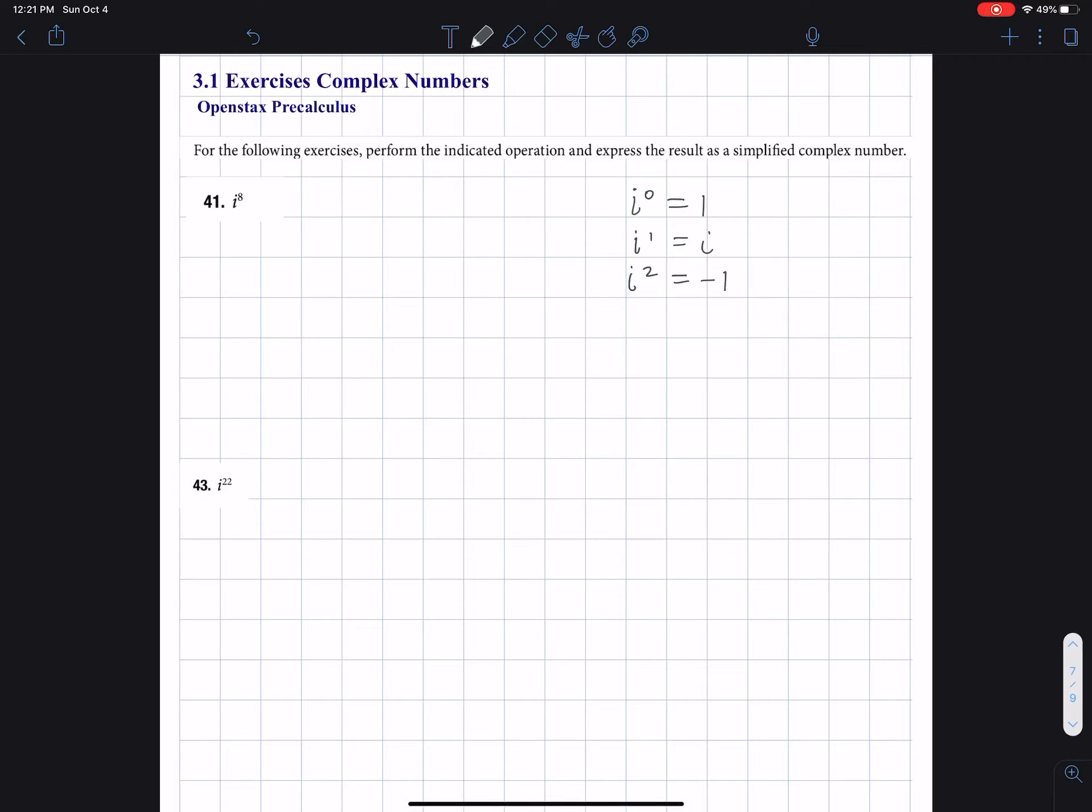i squared is negative one. i times i is negative one. i to the third power, this is i squared times i, but i squared is negative one. So i squared times i is negative i.